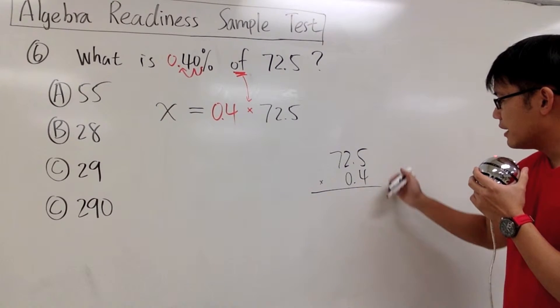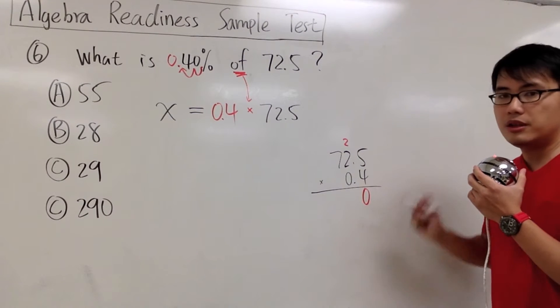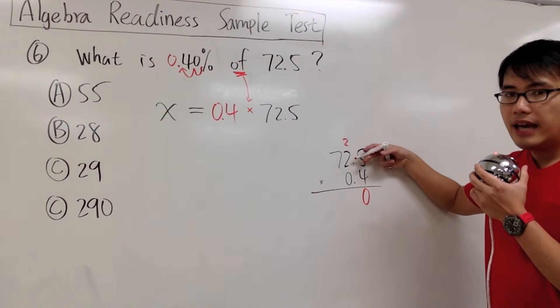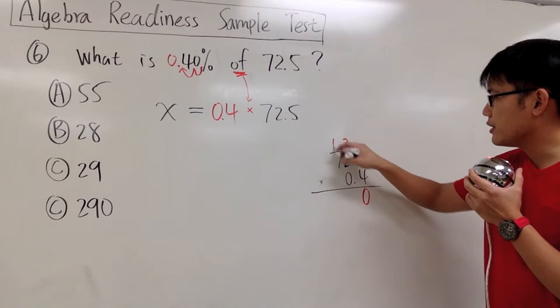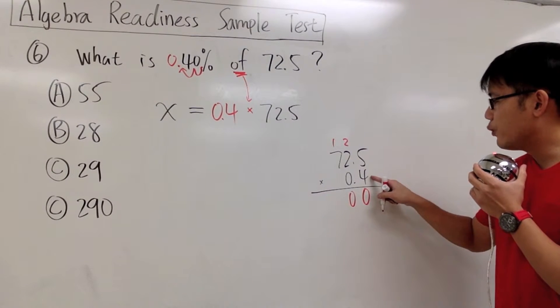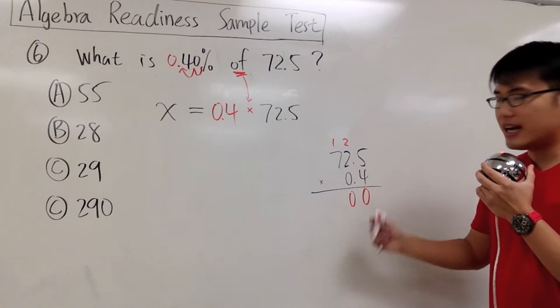4 times 5 is 20, so I have the 0 right here and the 2 right here. Then 4 times 2 is 8, plus 2 is 10, so I write down 1 and 0. Then 4 times 7 is 28, plus 1 is 29.